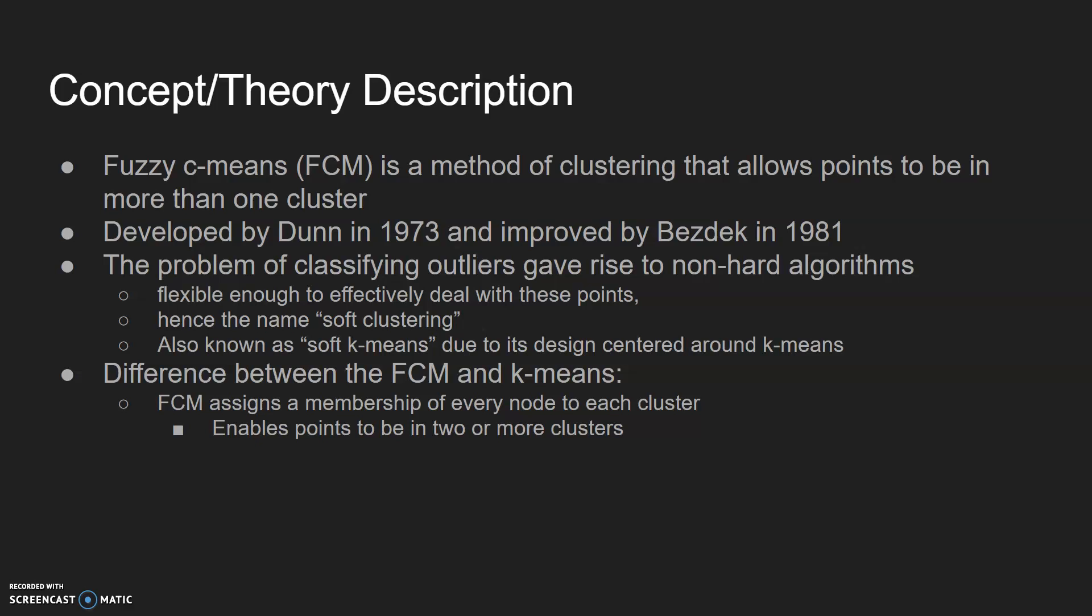The difference between FCM and k-means is that FCM assigns membership of each node to each cluster. This allows points to be partially in one cluster and partially in another cluster. Every node has a membership to every single cluster.